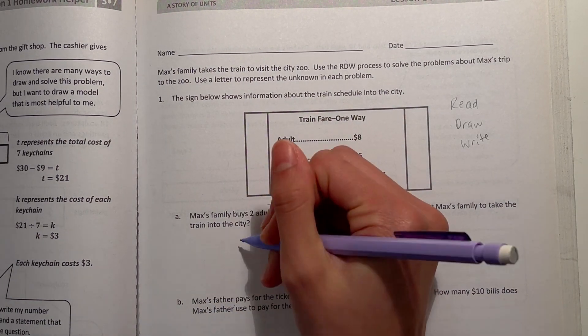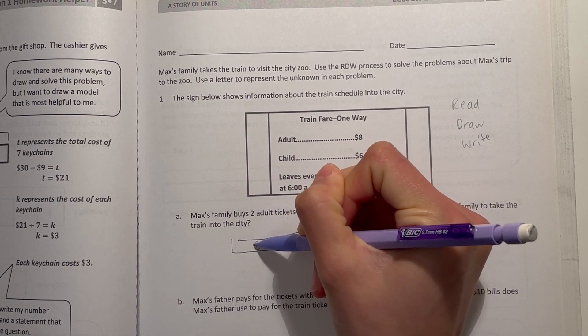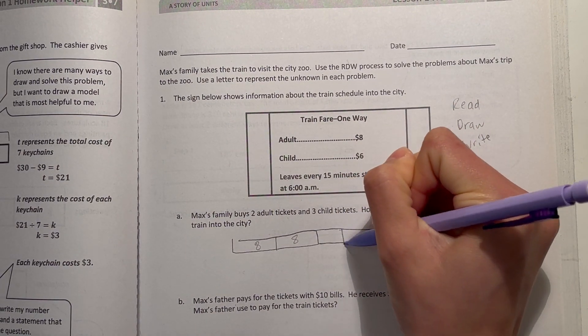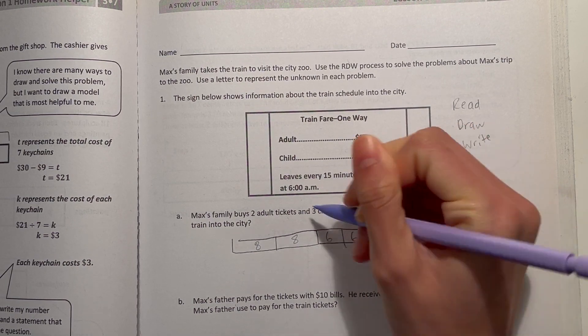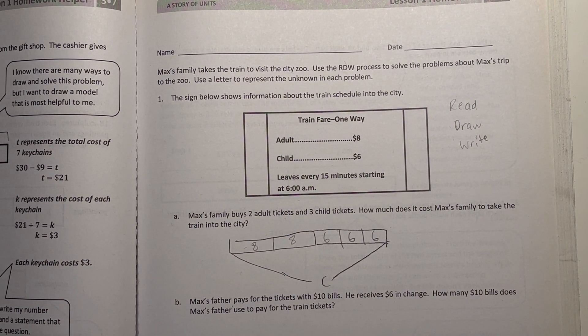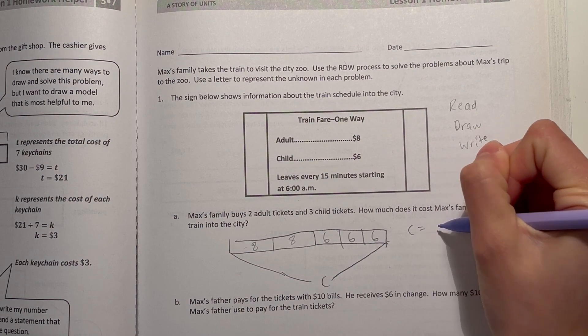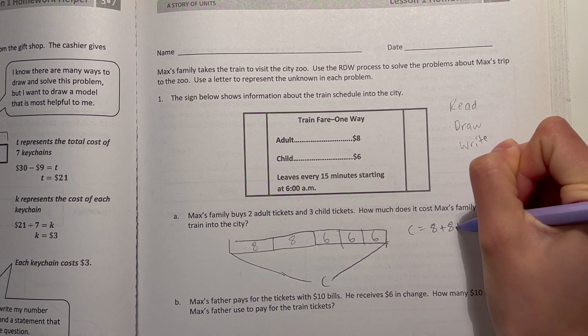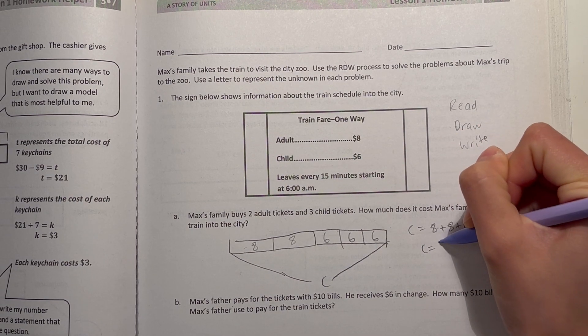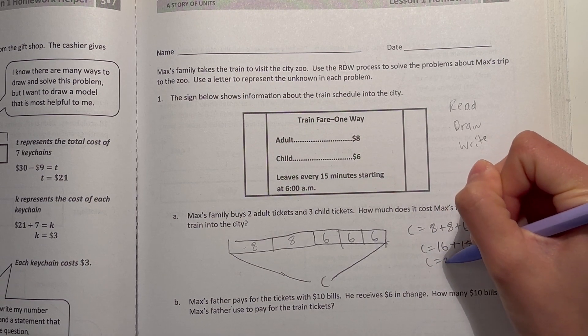2 adult tickets. Well, each adult ticket is $8. So we can split this into 8 and 8. And 3 child tickets. And 3 child tickets is $6. So the tape diagram and the total is C for cost. So now we're right. Now we solve the problem. So our cost is 8 plus 8 plus 6 plus 6 plus 6. Cost 8 plus 8 is 16. 6 plus 6 is 12 plus 6 is 18. So our cost is $34.